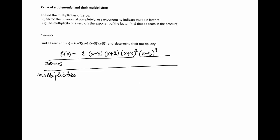If we have zeros of a polynomial, then it is relatively easy to find the multiplicities. We'll have to factor the polynomial completely and use exponents to indicate multiple factors, and we have to remember that